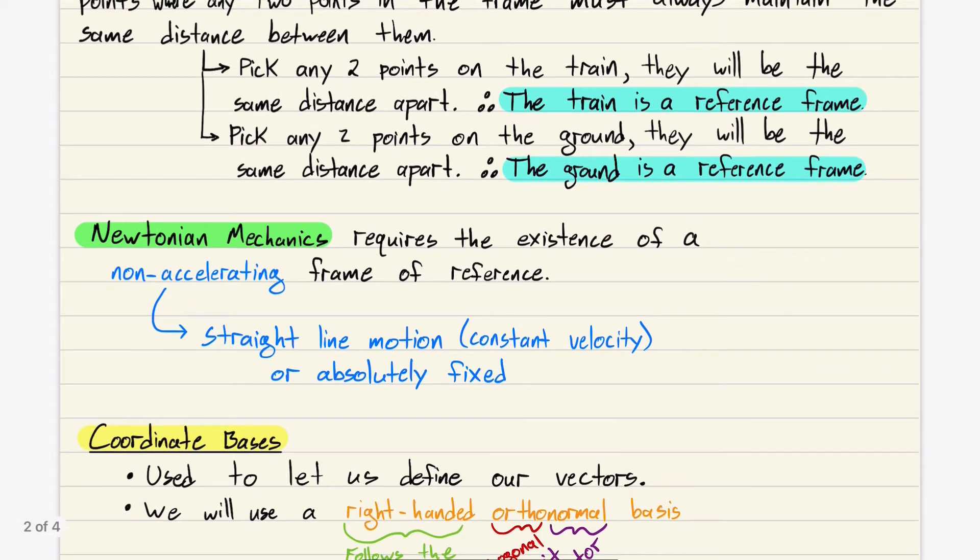In Newtonian mechanics, it requires the existence of a non-accelerating reference frame. Your non-accelerating reference frame is an inertial frame. That means it's constrained to only either straight line motion at a constant velocity, so it's not accelerating, or it's absolutely fixed in space.